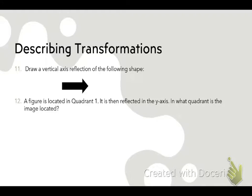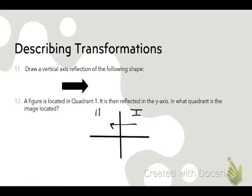Number 12: A figure is located in quadrant one. It is then reflected over the Y-axis. In what quadrant is the image located? You can draw a little x-y axis if you need to. Talila answered quadrant two, and that is correct. If it's in quadrant one and reflects over the Y-axis, it goes to quadrant two.